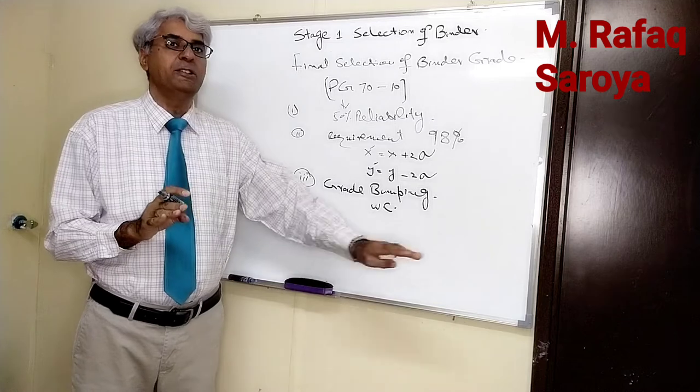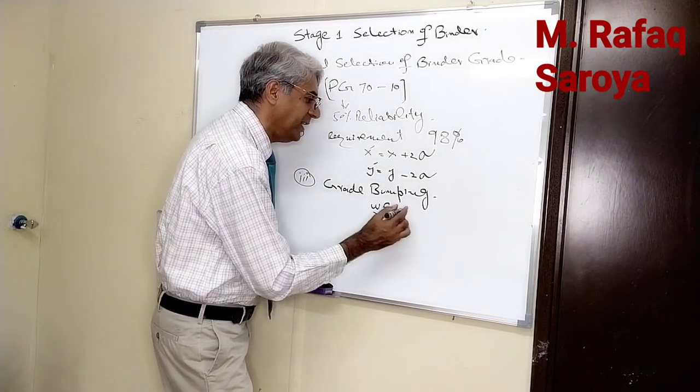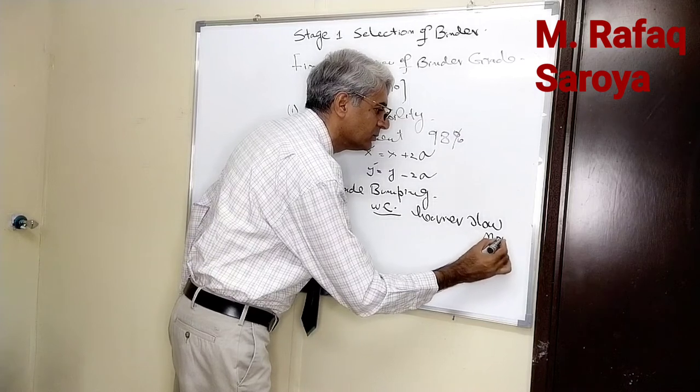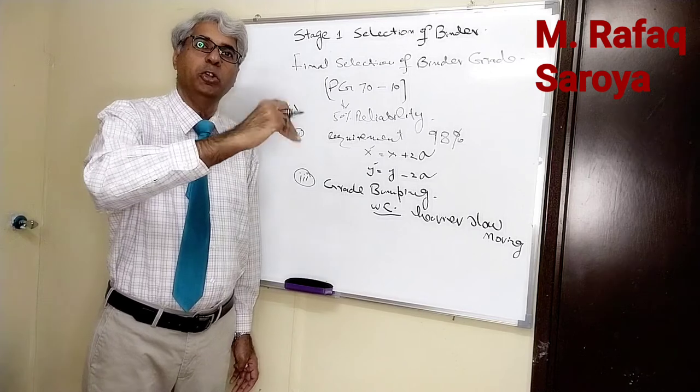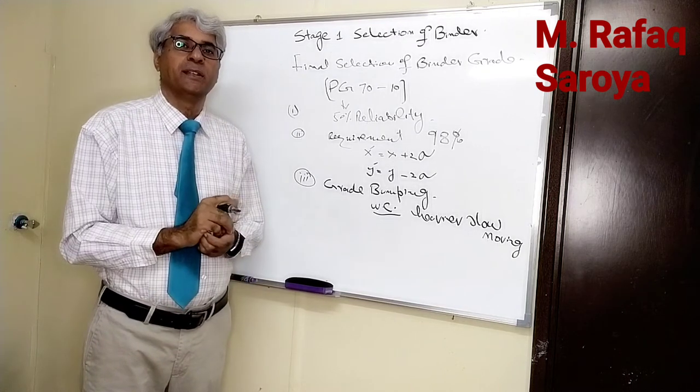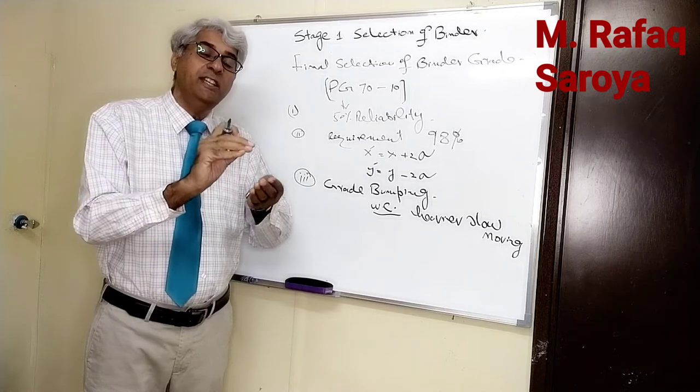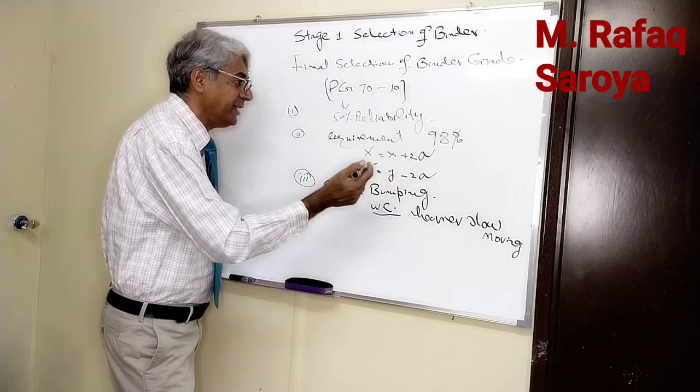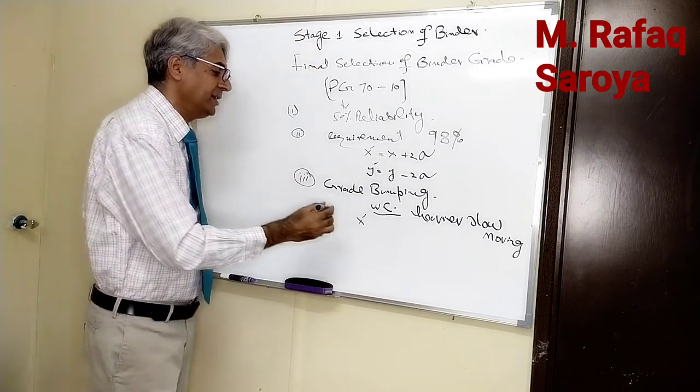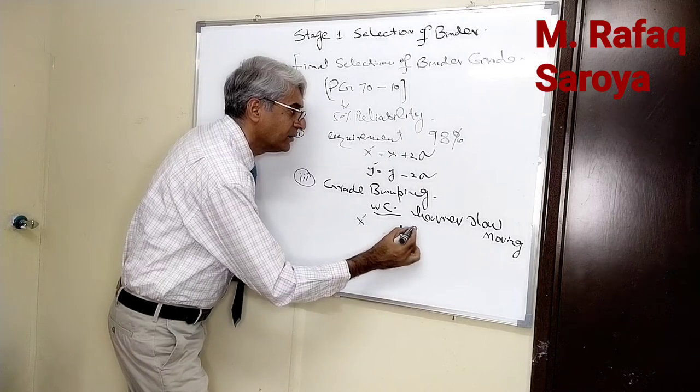This heavier traffic will be slow moving, and sometimes light traffic will be fast moving. When we design this wearing course A for heavier traffic and slow moving, as I had explained in the viscoelastic behavior, heavier and slower moving means it is going to produce viscous behavior, meaning increase of temperature. Here the value of X dash is bumped up, meaning we have to increase 6 Celsius more.